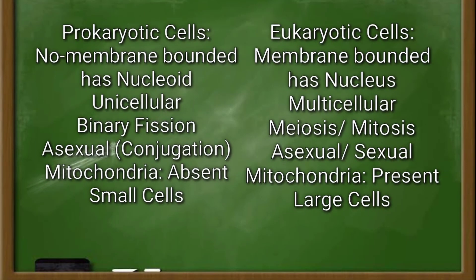Another difference among them is the size. Prokaryotic cells are small cells while eukaryotic cells are large cells. To sum it all, here is the difference between prokaryotic and eukaryotic cells.